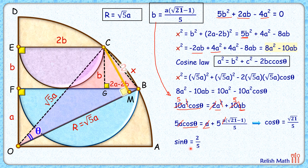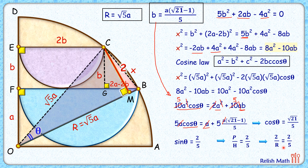Since sin θ = perpendicular / hypotenuse, in triangle OMC we put sin θ = 2/5, with the perpendicular being 2 cm and the hypotenuse being the radius R of the quadrant. So 2/R = 2/5, which gives R = 5 centimeters.